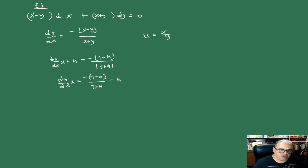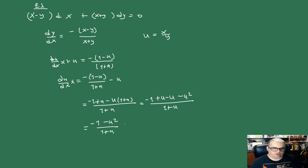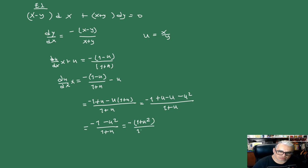Esto es lo mismo que du/dx · x igual a menos (1 - u) sobre (1 + u) menos u. Reescribimos: menos (1 + u) menos u · (1 + u) sobre (1 + u), que es menos 1 más u menos u menos u², sobre (1 + u), lo que da menos (1 + u²) sobre (1 + u).